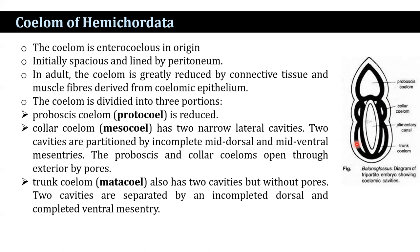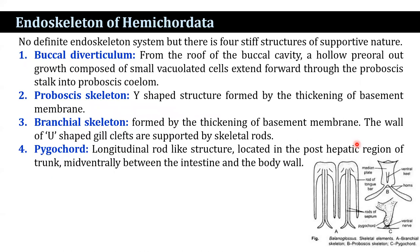There is no definite endoskeleton system, but there are four stiff supportive structures present: the buccal diverticulum, proboscis skeleton, branchial skeleton, and pygochord.